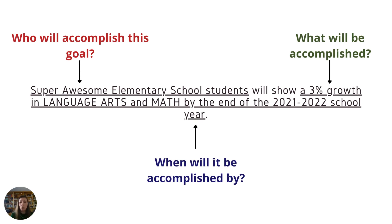Finally, indicate when this goal will be accomplished by. What are the time constraints around this goal? Does it need to be accomplished at the end of the semester, at the end of the school year, by December of the following year? Whatever timeline you set is fine, just make sure that it is clear in your goal.